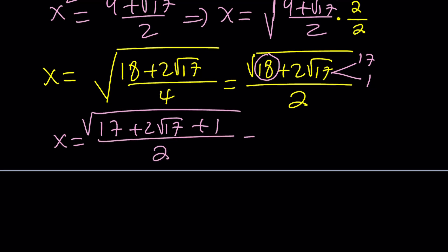Now, this is the square root of 17 plus square root of 1, which is 1 squared inside the radical. And since this is a positive quantity, it's just going to become square root of 17 plus 1 over 2. Did that make sense?